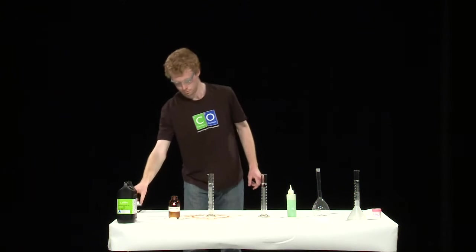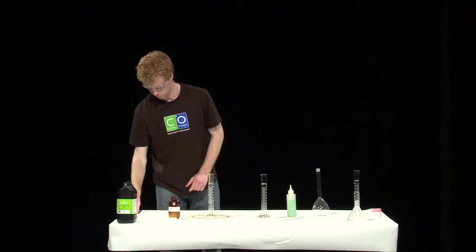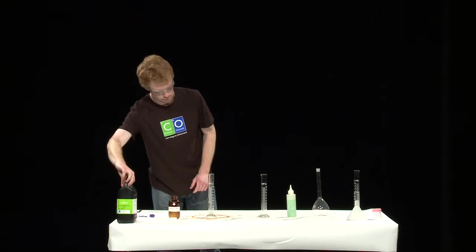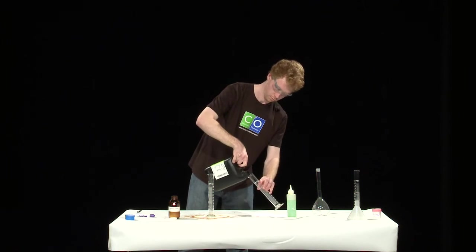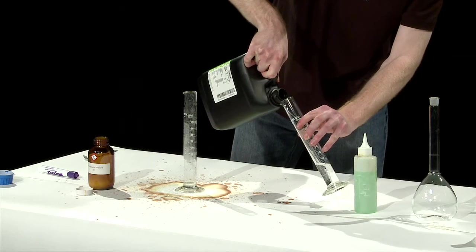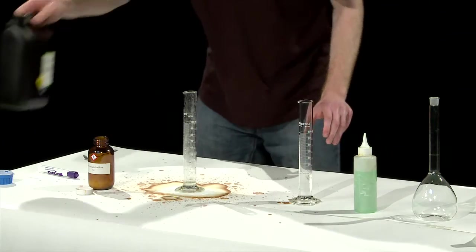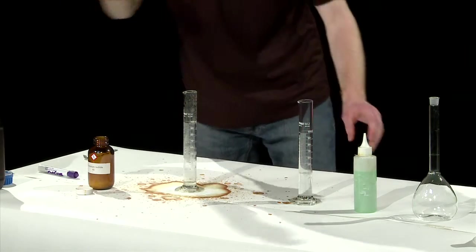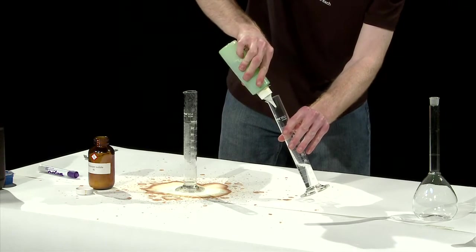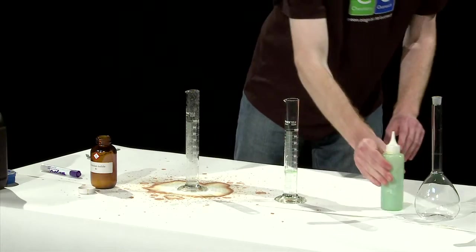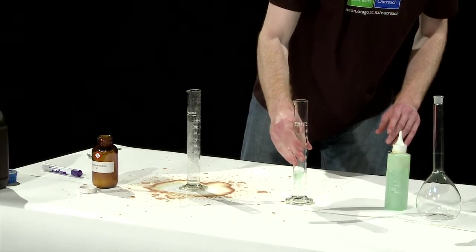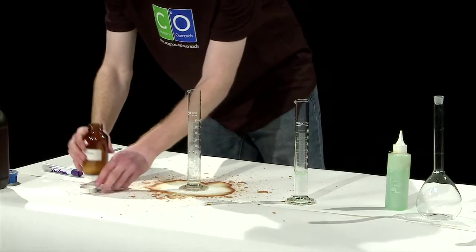Now, since this reaction produces a lot of gas, we can make it much more spectacular by adding some dishwashing liquid. Once again we add the hydrogen peroxide. This time we add just a small amount of dishwashing liquid. And now watch what happens as we add the potassium iodide.